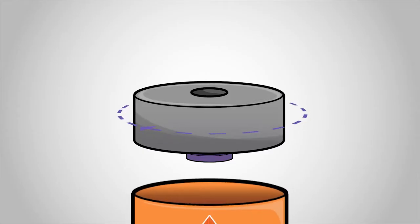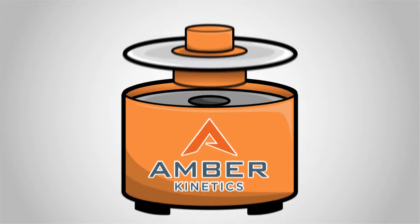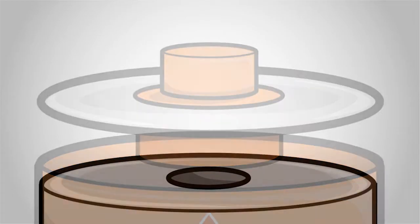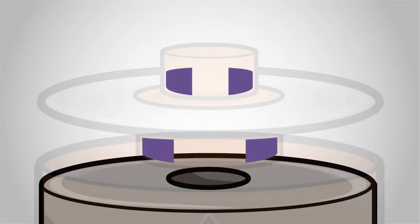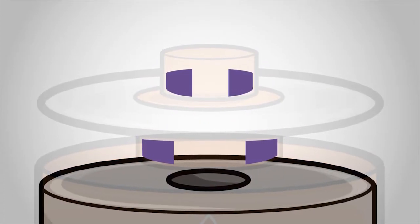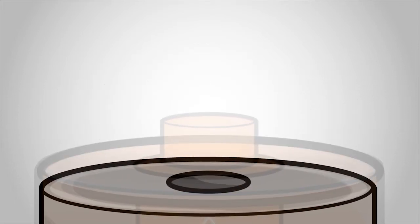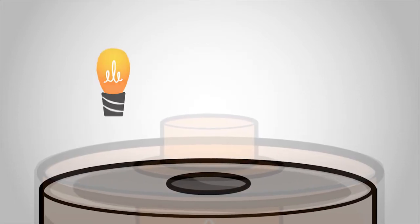The flywheel spins easily because it's in a vacuum sealed container levitated by a magnet and riding on special bearings. It can reach thousands of revolutions per minute, then its speed can be maintained with the same amount of energy that it takes to power a light bulb.